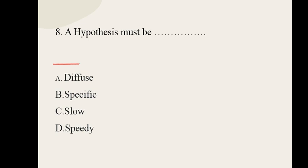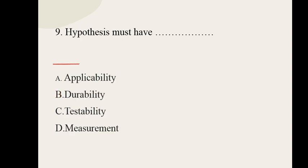Question number eight: a hypothesis must be dash. Options: diffuse, specific, slow, speedy. The correct option is specific. Question number nine: hypothesis must have dash. Options: applicability, durability, testability, measurement. The correct option for question number nine is testability.